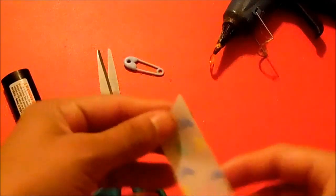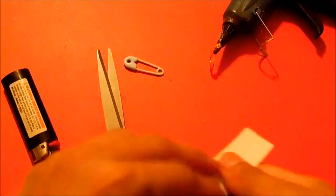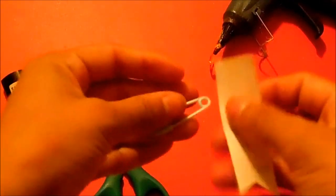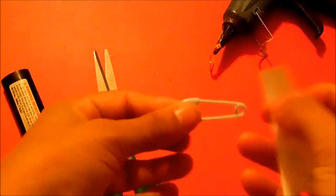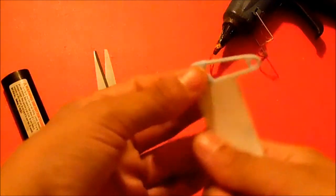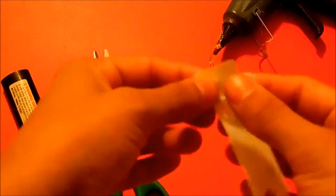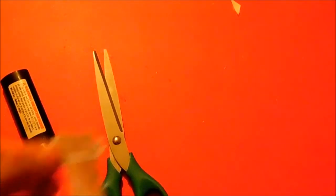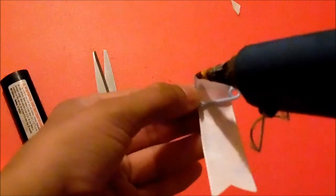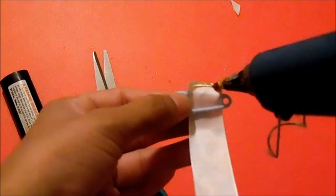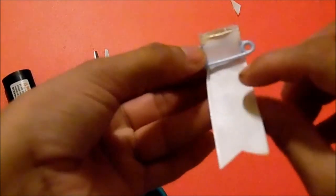Then after you are done with all that, you want to grab your plastic safety pin and pass your ribbon through the pin just like that. And then you grab your hot glue gun, put some glue on the top of the ribbon and then you just fold it. And it should end up looking just like this.